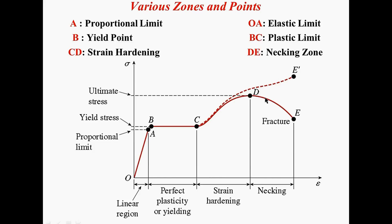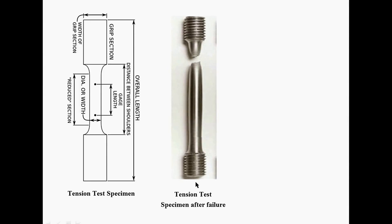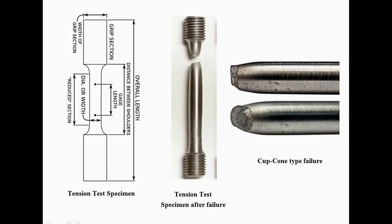If we further go on increasing the applied load, we can observe that stress is reducing, and this happens till point E. This region is known as the necking zone. From point D onwards, there is a reduction in the area of the specimen taking place. The material reduces its area at one particular point, and at point E it fails into two separate pieces. After failure, you can observe the reduction in area, and the specific type of failure formation is cup and cone. This also shows that the material is ductile — this behavior is observed specifically in ductile materials.